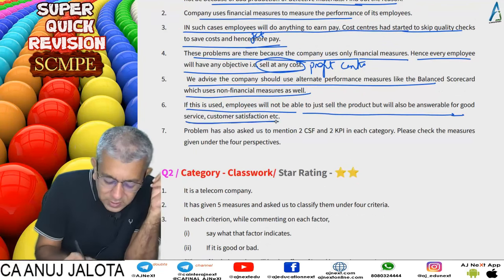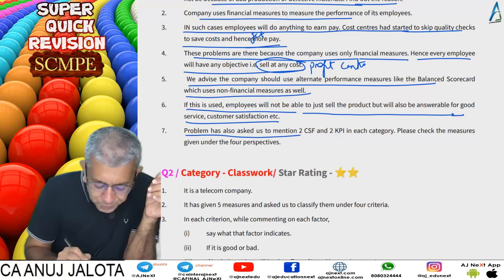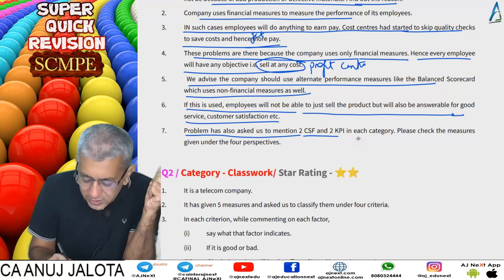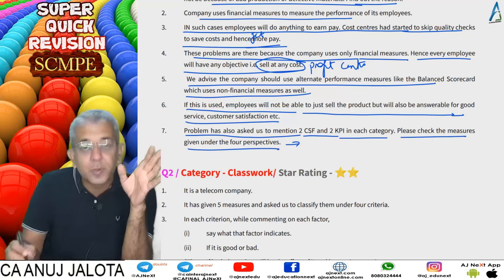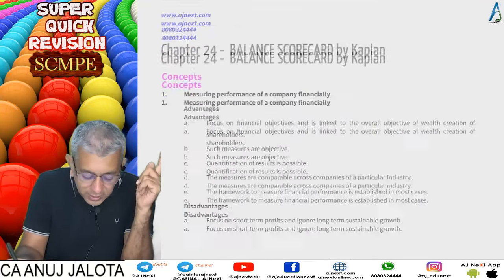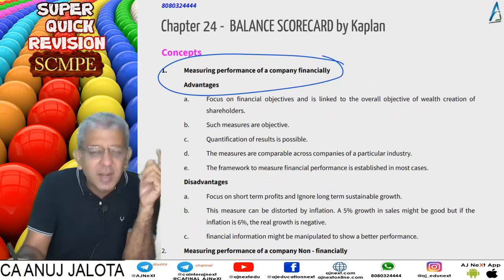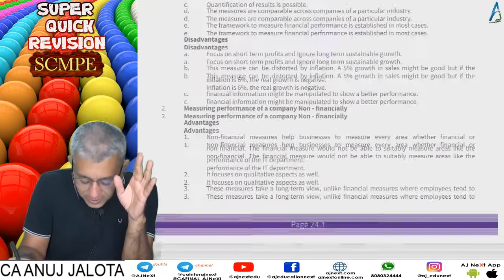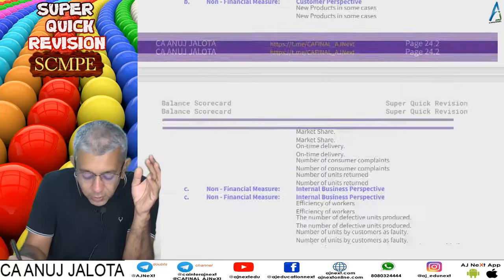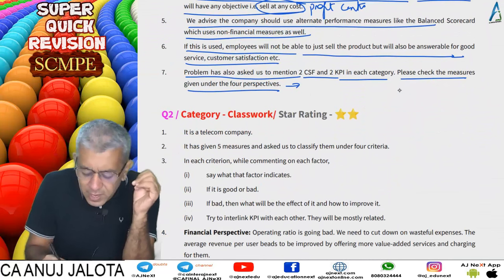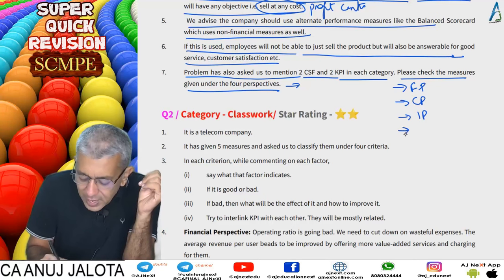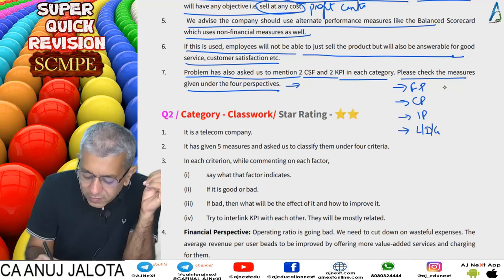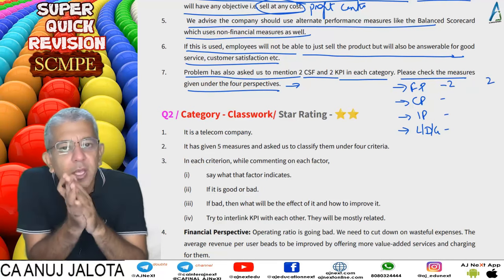We advise the company to use an alternate performance measure like the Balanced Scorecard, which uses non-financial measures as well. Employees will then not just be judged on selling but also on customer service and satisfaction. The question also asked us to mention two CSFs and two KPIs for each BSC category. Check the measures under the four perspectives.